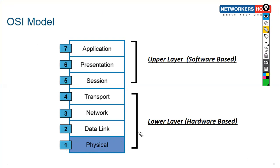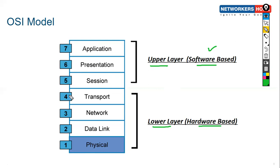L1 to L4 are the lower layers, also known as hardware-based layers. The upper layers — L5, L6, and L7 — are also known as software-based layers because layers 5, 6, and 7 always work on software. L1 through L4 are known as hardware-based layers.